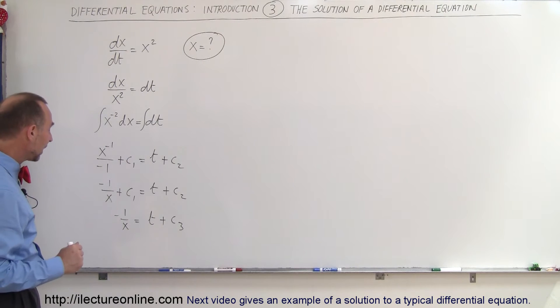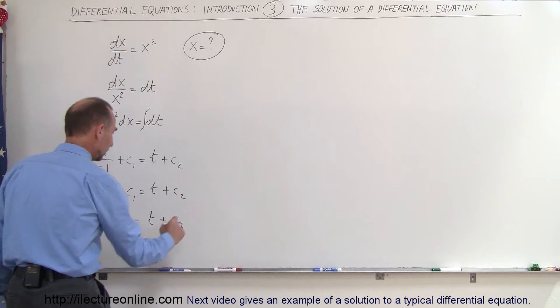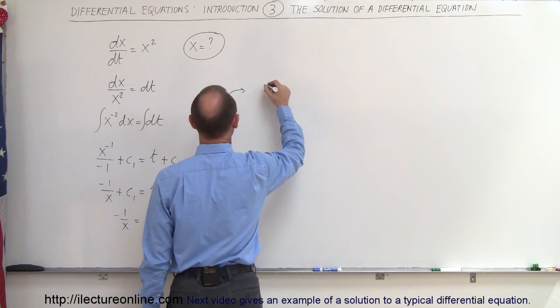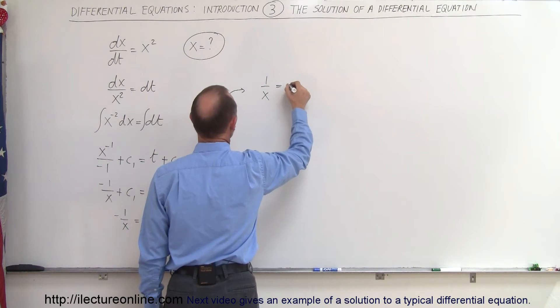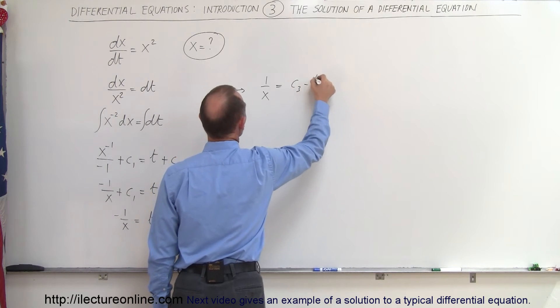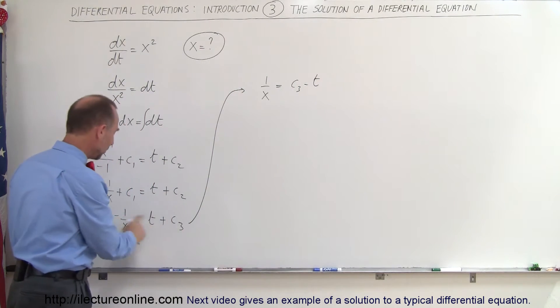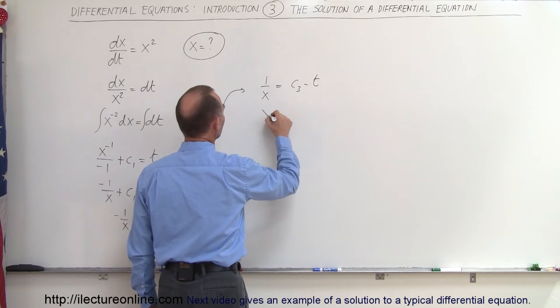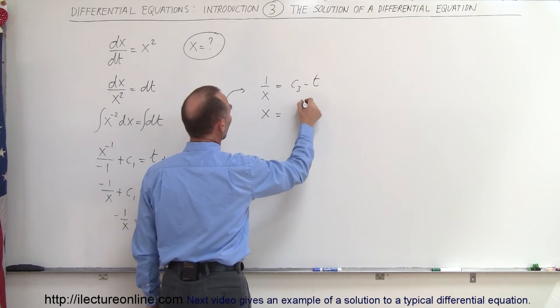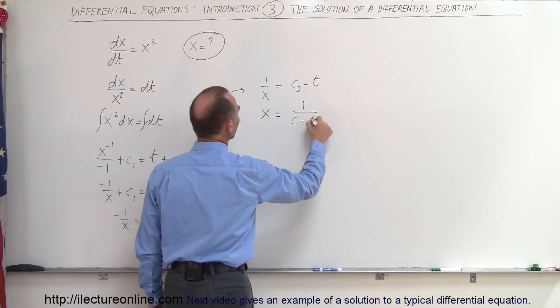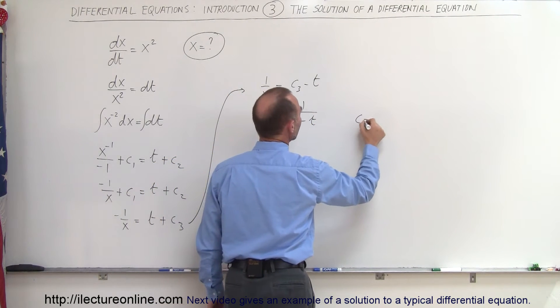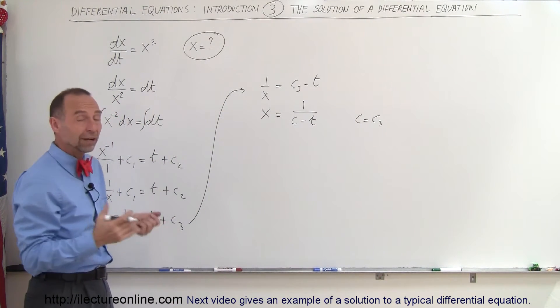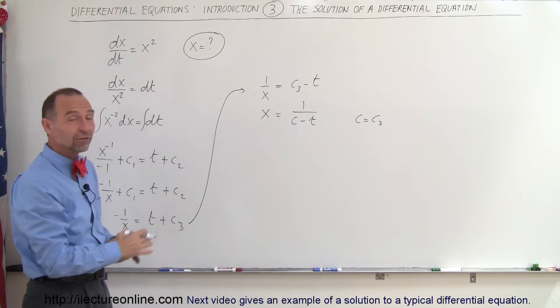Then I want to multiply both sides by negative 1. So multiply both sides by negative 1, I get 1 over x is equal to c3 minus t, because I multiply both sides by negative 1. Now I want to take the inverse of that. So I can say that x over 1, or simply x, is equal to 1 over c minus t. So I'm going to let c equals c3, because now I just have one constant left so I'll just call it c. And what I've done now is I've actually solved my differential equation.